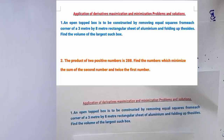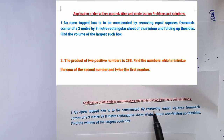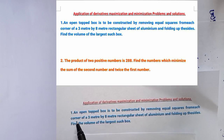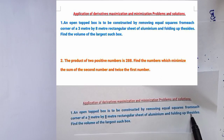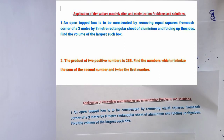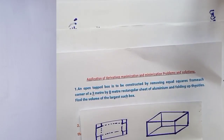The first problem is given as: an open top box is to be constructed by removing equal squares from each corner of a 3 meter by 8 meter rectangular sheet of aluminium and folding up the sides. Find the volume of the largest such box.